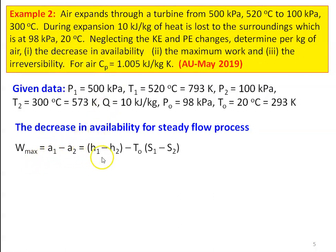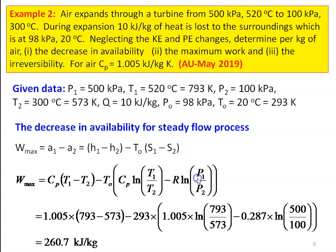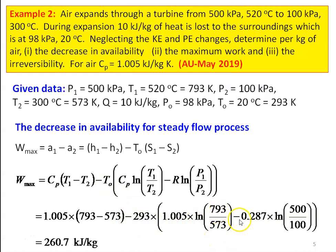Maximum work = A1 − A2 = H1 − H2 − T0(S1 − S2). H1 − H2 = Cp(T1 − T2). Entropy change S1 − S2 = Cp·ln(T1/T2) − R·ln(P1/P2). Substituting: 1.005×(793 − 573) − 293×[1.005·ln(793/573) − 0.287·ln(500/100)] = 260.7 kJ/kg. The decrease in availability and maximum work = 260.7 kJ/kg.